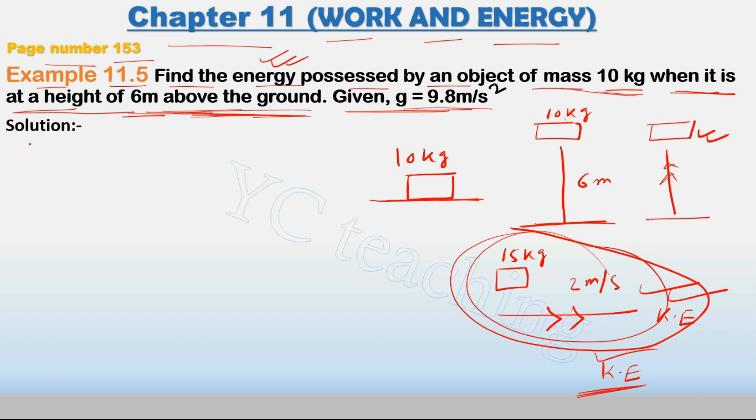See the question: find the energy of an object of mass 10 kg. Given m is equal to 10 kg, height is h equal to 6 meter, and g is equal to 9.8 meter per second square.